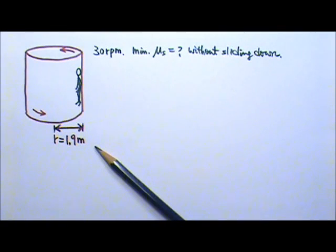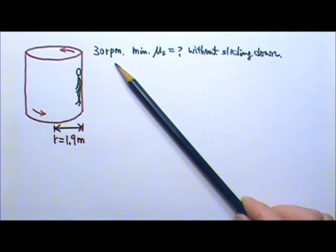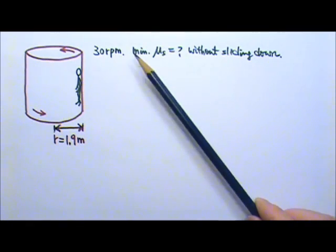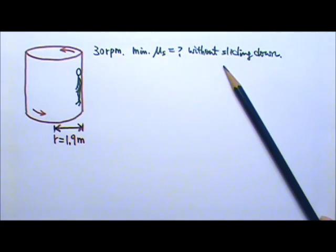In this problem, the rotor ride cylinder has a radius of 1.9 meters and has a top spin rate of 30 RPM. The RPM here stands for revolutions per minute. We are looking for the minimum mu_s between the rider's clothing and the wall so the riders do not slip down.